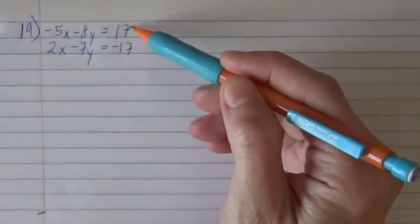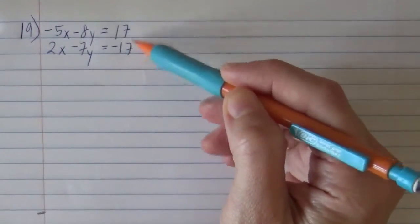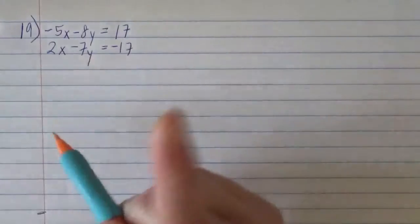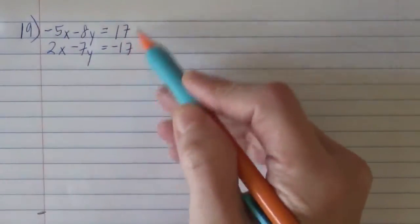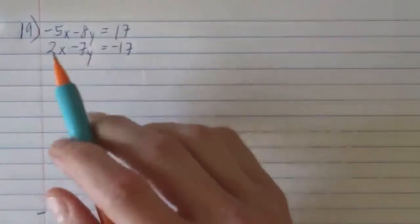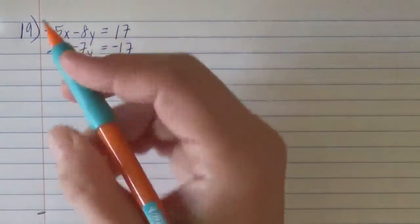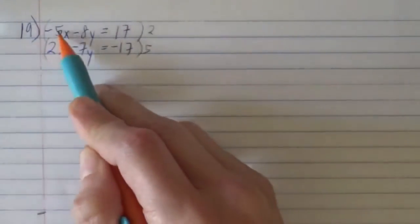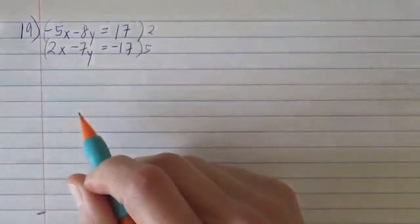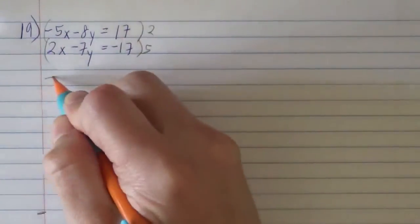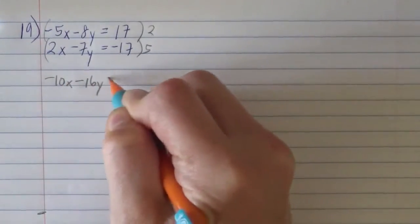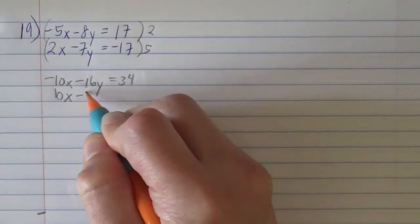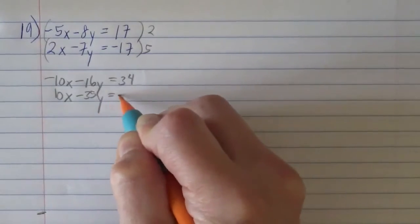So for this one, I remember when I first started these, I was tempted to eliminate the 17's. I'm like, ah! They go away. But that doesn't help us because the purpose is to eliminate one of the variables, so we have one variable in our equation. Because if you eliminate the 17's, you still have x's and y's. So we have to eliminate either the x or the y. I want to go for the x's. I'll multiply this guy by 2 and I'll multiply this guy by 5 to make those a negative 10x and a positive 10x so that they go away. So when I do the top guy by 2, I get negative 10x minus 16y equals 34. And the bottom guy by 5, I get 10x minus 35y equals negative 85.